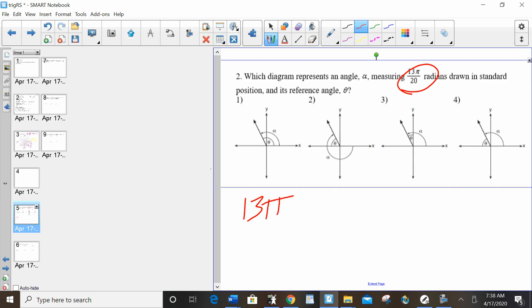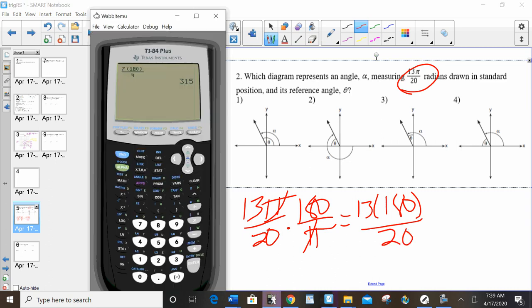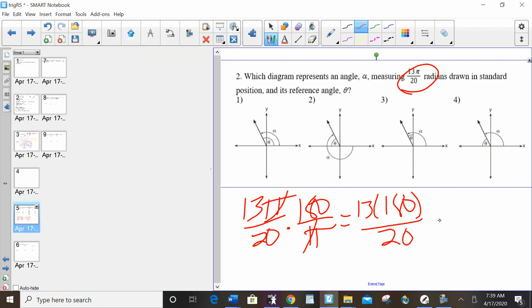So my first step is to convert to degrees by multiplying by 180 over pi. I have 13 times 180 over 20.